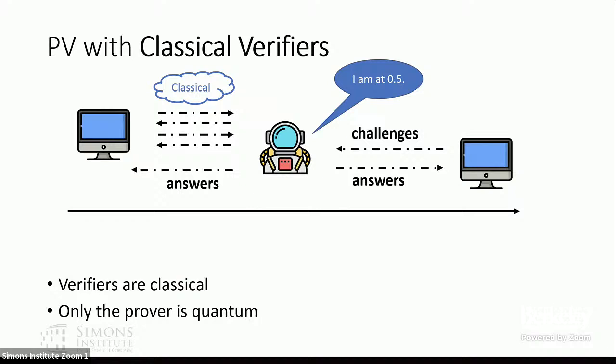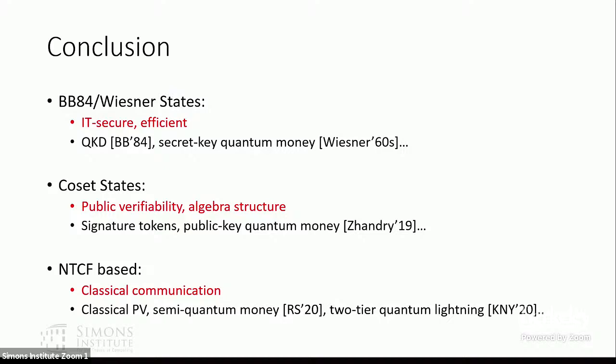Based on that, we can achieve a position verification protocol with a purely classical verifier, where only the prover — the astronaut — needs to be quantum. To conclude, we used position verification as an example to illustrate different notions of unclonability. There are many more applications beyond position verification, and this is an active area with many interesting implications in both quantum information and cryptography.